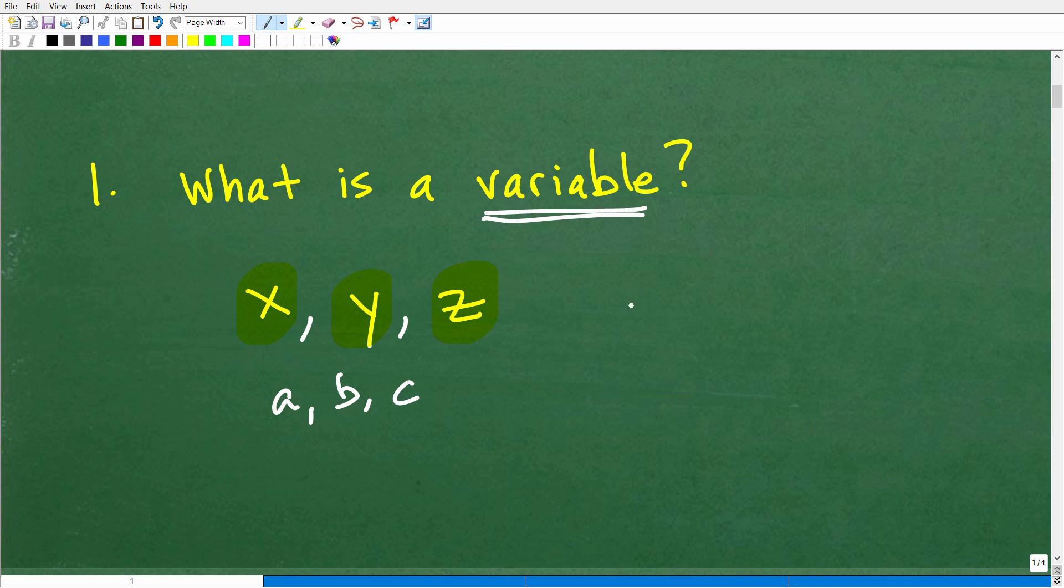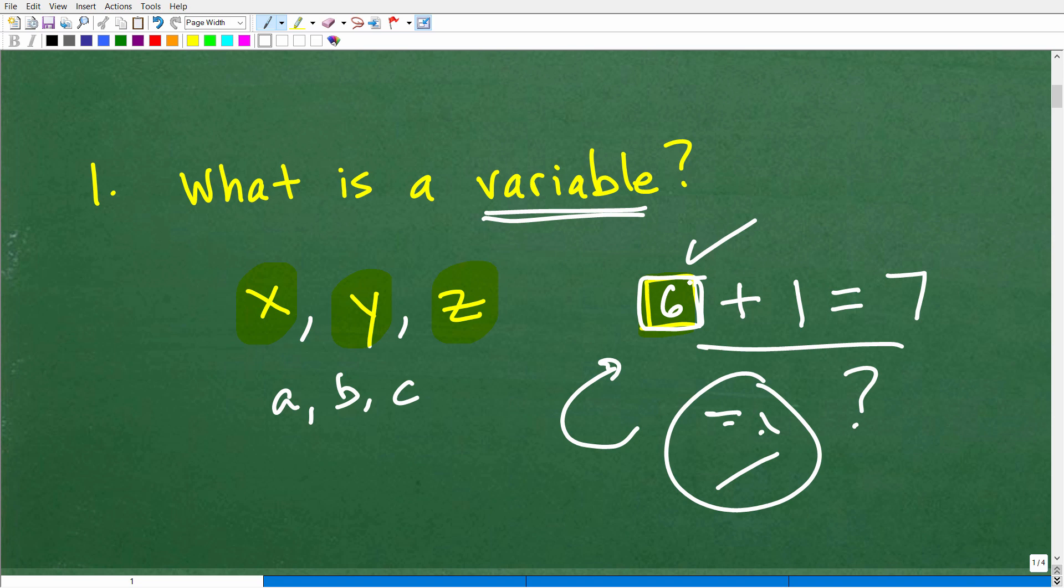But you were actually working with variables way back in the first and second grade. So you remember these little questions like there would be like a box plus 1 is equal to 7. And you would be sitting there. You'd be like, hmm, you're 6 or 7 years old and you're trying to think through, what do I need to put in this box? What number does this symbol represent to make this true? And then you would say, oh, it's 6. You would be correct. Matter of fact, this is algebra. You were solving equations, but this little box is a symbol that represents a number.